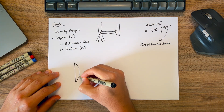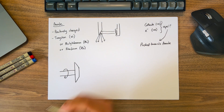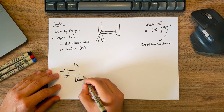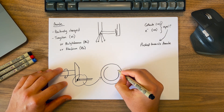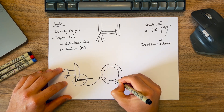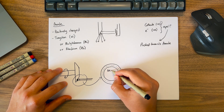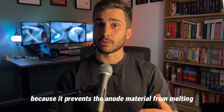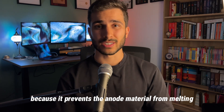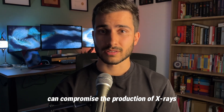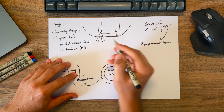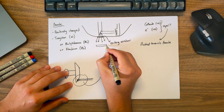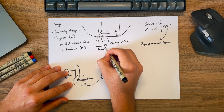The anode is actually on a rotor, meaning that it rotates. It's like this because when the electron collides with the anode, it also generates a lot of heat. So to counteract that effect, the anode rotates to spread the heat over a large surface area, which prevents it from overheating in one single spot. This is important because it prevents the anode material from melting, which can compromise the production of x-rays. Once the x-rays are produced, they're then guided through what's called an exiting window, which can go through various filters and collimators before it reaches the patient or detector.